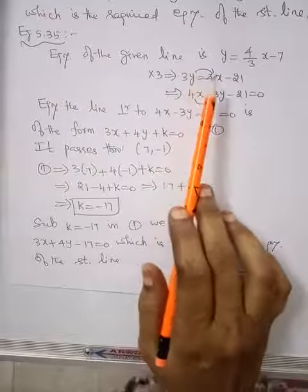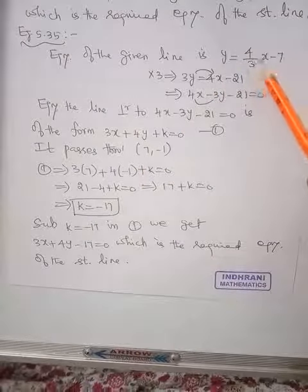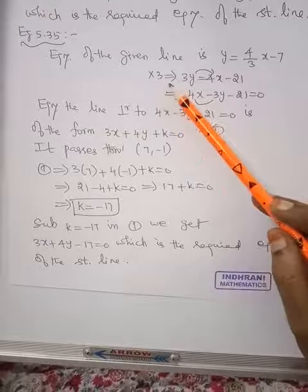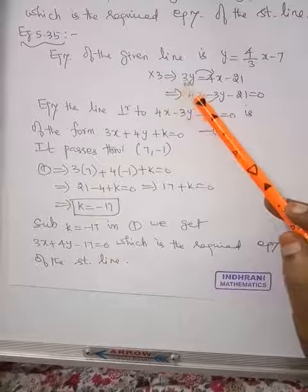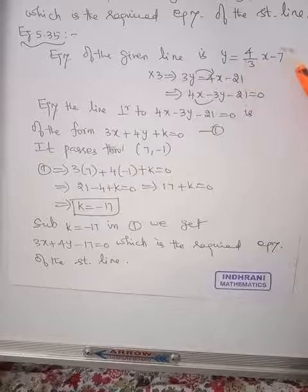So equation of the given line is y equal to 4 by 3 into x minus 7 into 3. Since denominator has 3, multiply by 3. You will get 3y.